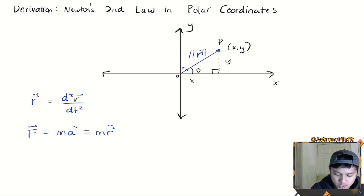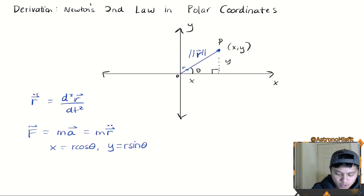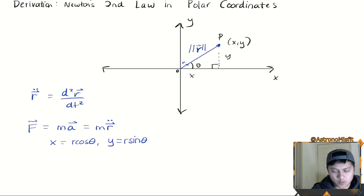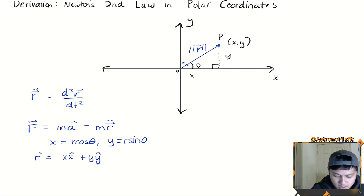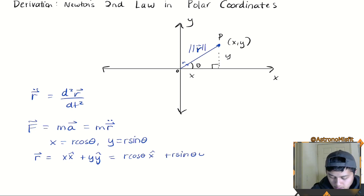Remember in Cartesian coordinates we have these transformations: x is equal to r cosine theta, y is equal to r sine theta. What we want to do is write the position vector. The position vector is just x x-hat plus y y-hat — sometimes you might see x-hat as i-hat and y-hat as j-hat. Using that transformation, we can rewrite the r vector as r cosine theta x-hat plus r sine theta y-hat.